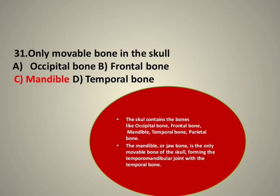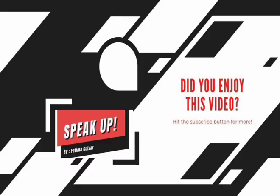The skull contains bones such as the occipital bone, frontal bone, mandible bone, temporal bone, and parietal bone. The mandible, or jaw bone, is the only movable bone of the skull, forming the temporomandibular joint with the temporal bone. I hope you can understand these MCQs regarding your JK, FPAC, and paper. Any questions or queries, please mention in the comment section. Don't forget to subscribe to my channel. Thank you so much.